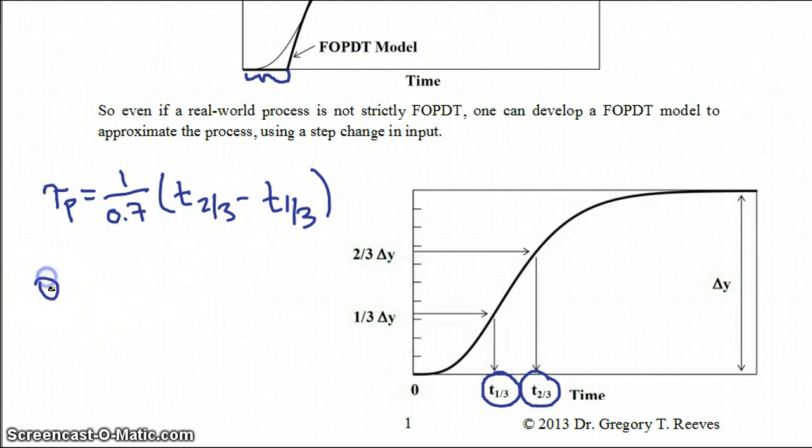And your delay time in your process is t_1/3 minus 0.4 times tau_p that you just calculated.